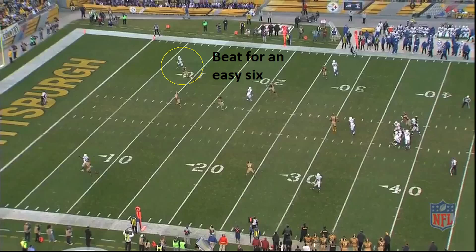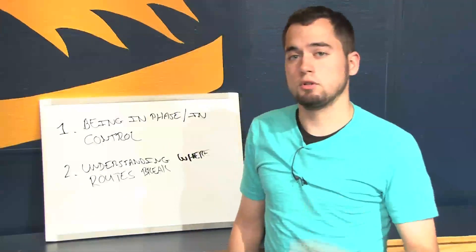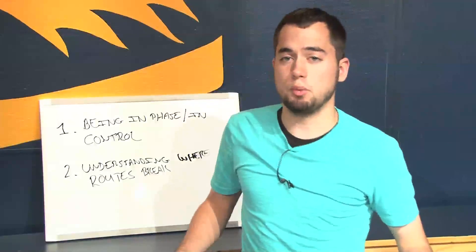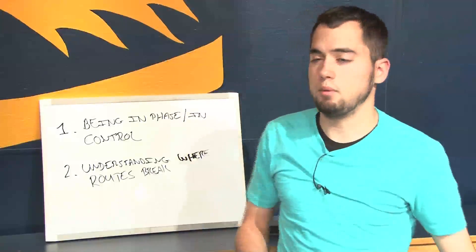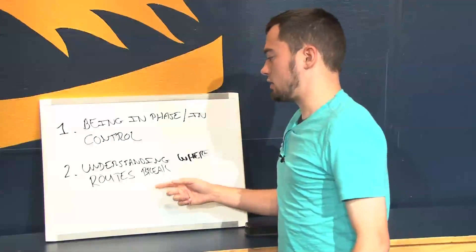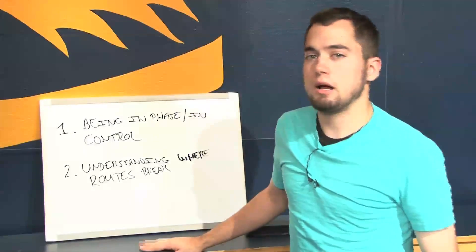So it's understanding where routes break. You see a receiver chop his feet at 10 yards, alert for a double move. So you want to stay in your pedal. You don't want to break on the ball and be able to protect should there be a double move. And that's exactly what happens here. So that's the big point of the second issue that Cortez Allen had, understanding where routes break.